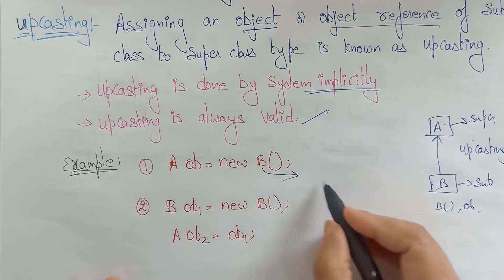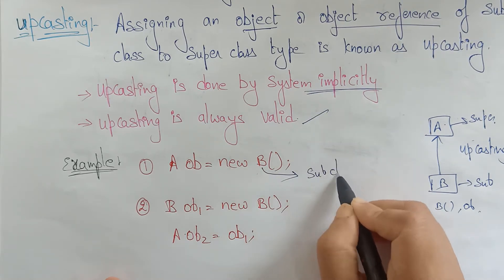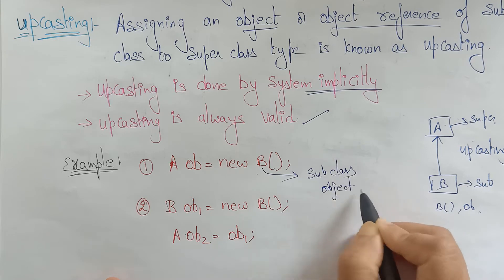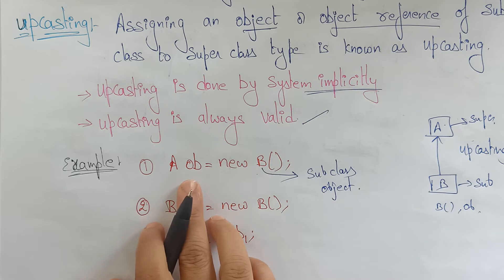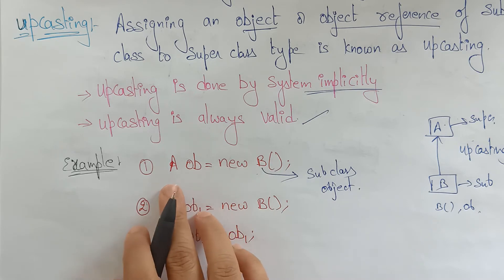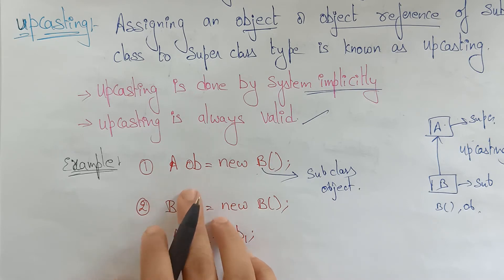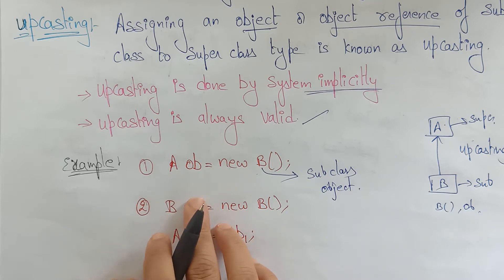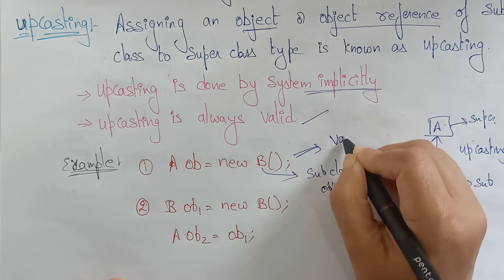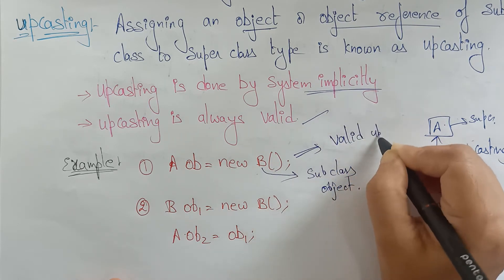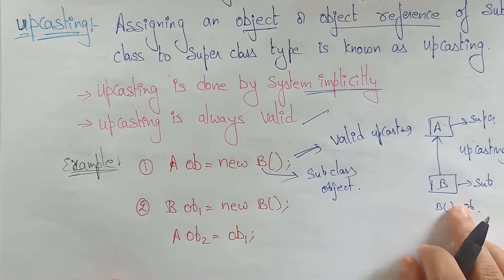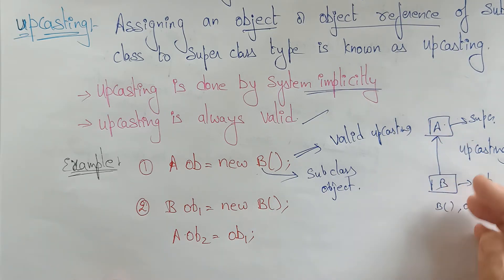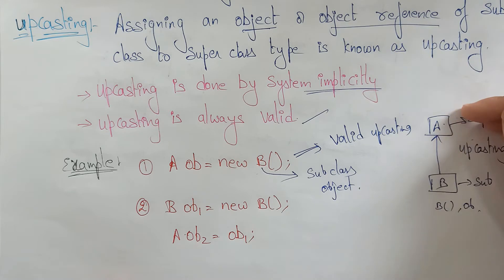See here — this is a subclass object, a new constructor is created. It is a subclass object, so that will be assigned to the superclass object reference. Is it valid upcasting? Yes, it's valid upcasting. We are creating an object in the subclass and that will be assigned to the superclass object reference — this is upcasting.